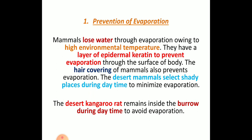In the desert, conditions are very hot during daytime and cold at night. Mammals lose water to evaporation due to high environmental temperature. They have layers of epidermal keratin — this thick keratin layer prevents evaporation — and their body is also covered with thick hairs, which helps them overcome evaporation. Desert mammals select shady places during daytime to minimize evaporation. The desert kangaroo rat remains inside its burrow during daytime to avoid evaporation.